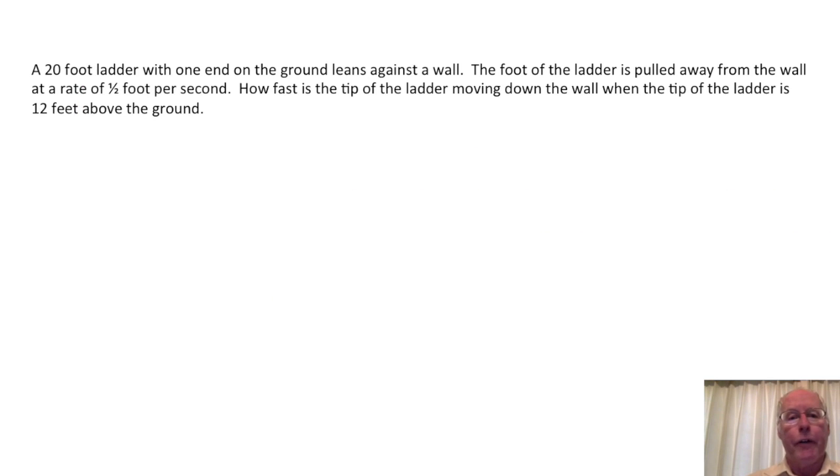A 20-foot ladder with one end on the ground leans against a wall. The foot of the ladder is pulled away from the wall at a rate of one half foot per second. How fast is the tip of the ladder moving down the wall when the tip of the ladder is 12 feet above the ground?